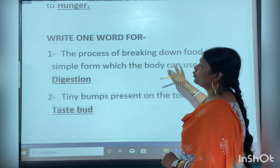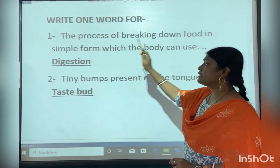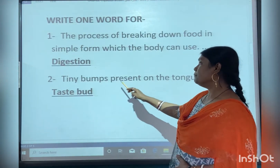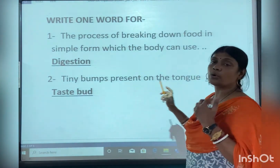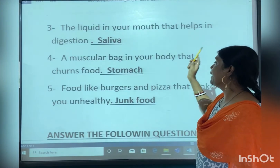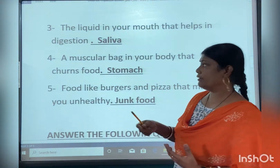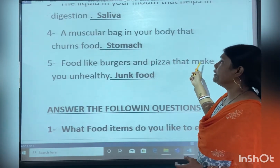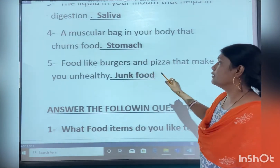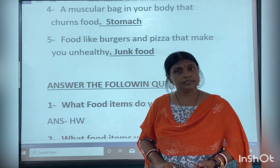Write one word for this sentence. The process of breaking down food into simple form which the body can use is digestion. Tiny buds present under the tongue are known as taste buds. The liquid in your mouth that helps in digestion is known as saliva. A muscular bag in your body that churns food is known as the stomach. Food like burgers and pizza that makes you unhealthy is known as junk food.